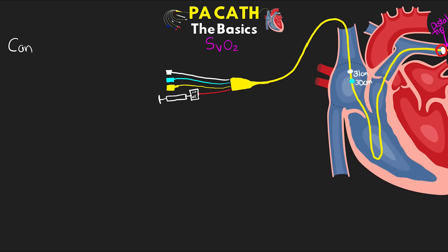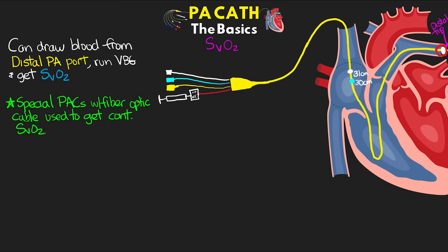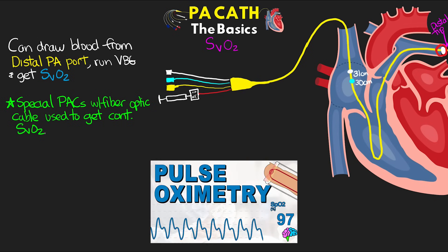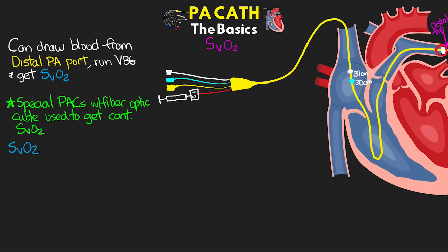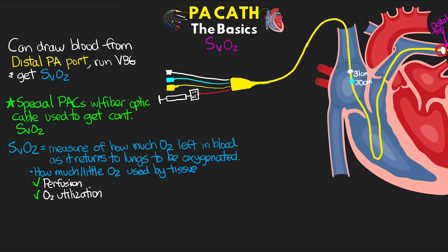Regarding mixed venous oxygen saturation: we can draw a blood sample from the yellow distal PA port and run a VBG to get the patient's SvO2. There are also special PA catheters with a fiber optic lumen that provide a continuous SvO2 reading. The SvO2 measures how much oxygen remains in the blood as it returns to the lungs, telling us how much — or how little — oxygen is being used by the tissue, giving insight into perfusion and oxygen utilization. SvO2 can also be used in the Fick calculation to determine cardiac output.